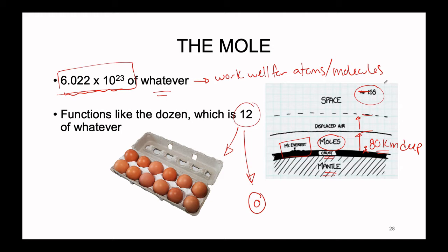So it's a huge number. A mole is humongous. This is just to emphasize not only what a large number the mole is, but also, in contrast, how small atoms and molecules are. Because a mole of atoms or a mole of molecules is roughly the size of something that could fit in your hand. So atoms and molecules are incredibly tiny.